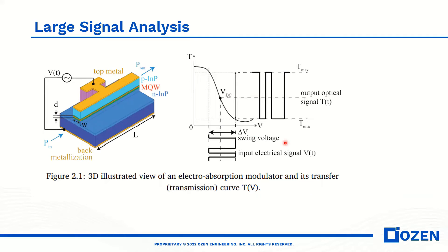For signal analysis of the modulator, we need a DC bias voltage and an AC signal. The DC bias voltage allows us to tune our working point. This is our DC bias voltage, this is our swing voltage, and this is the input electrical signal. When we have an input electrical signal at this bias point, we see the corresponding optical signal. To have a symmetric swing, it is better to bias at the middle of the linear region.